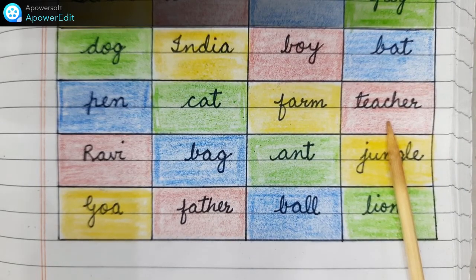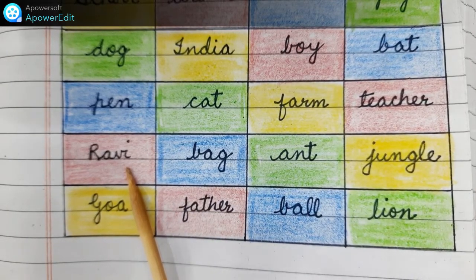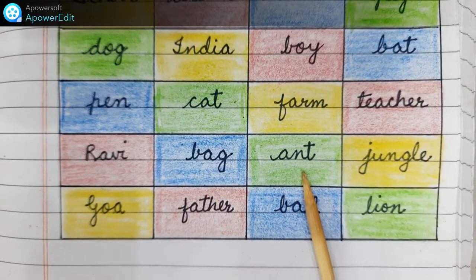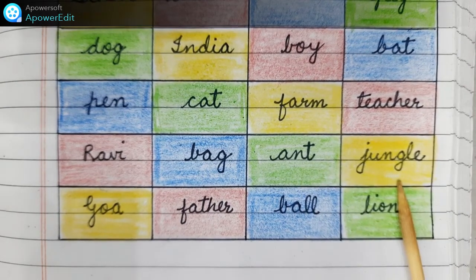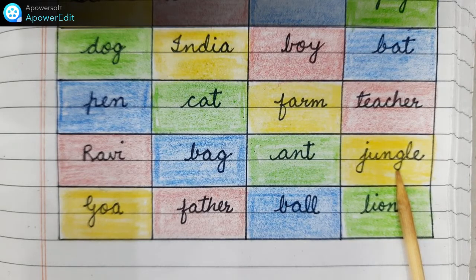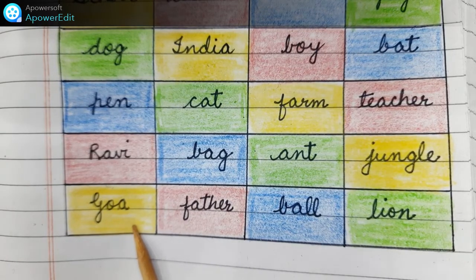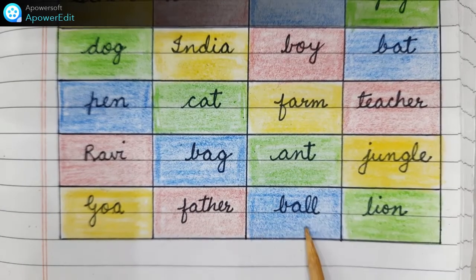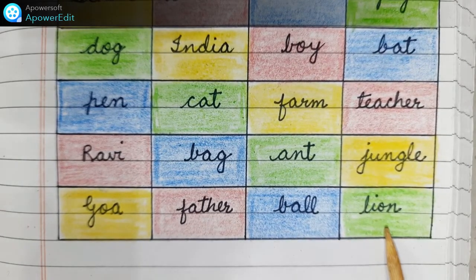Teacher is the name of a person so we will color it blue. Ravi again is the name of a person so we will color it red. Bag is the name of a thing so we will color it blue. Ant is the name of an animal so we will color it green. Jungle is the name of a place so we will color it yellow. Goa again is the name of a place so we will color it yellow. Father is the name of a person so we will color it red. Ball is the name of a thing so we will color it blue. Lion is the name of an animal so we will color it green.